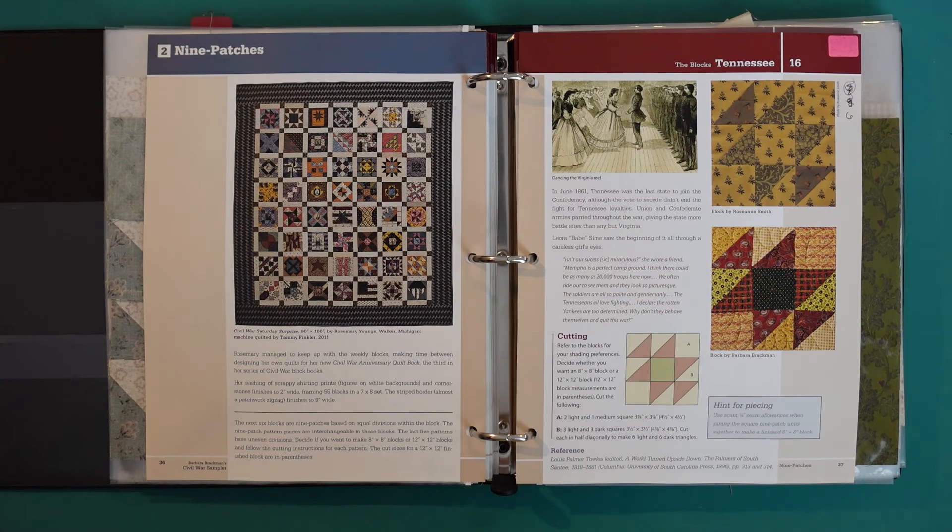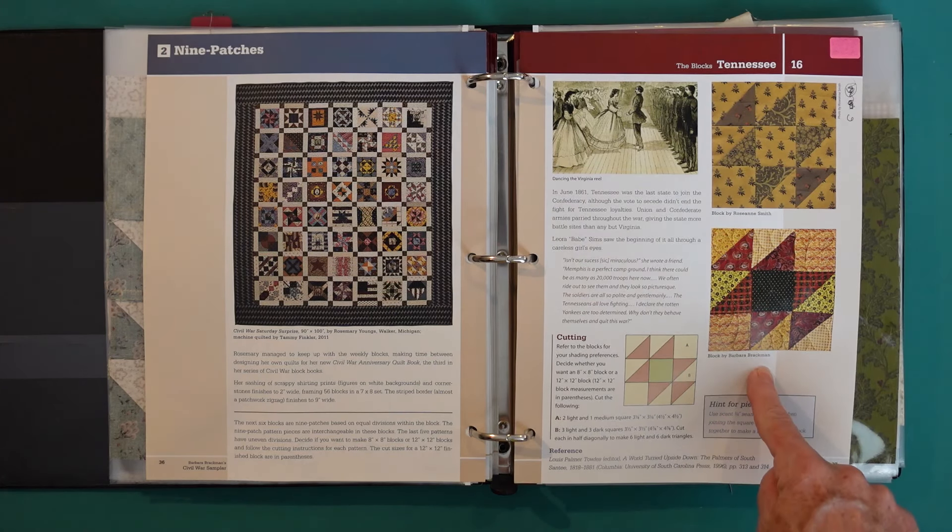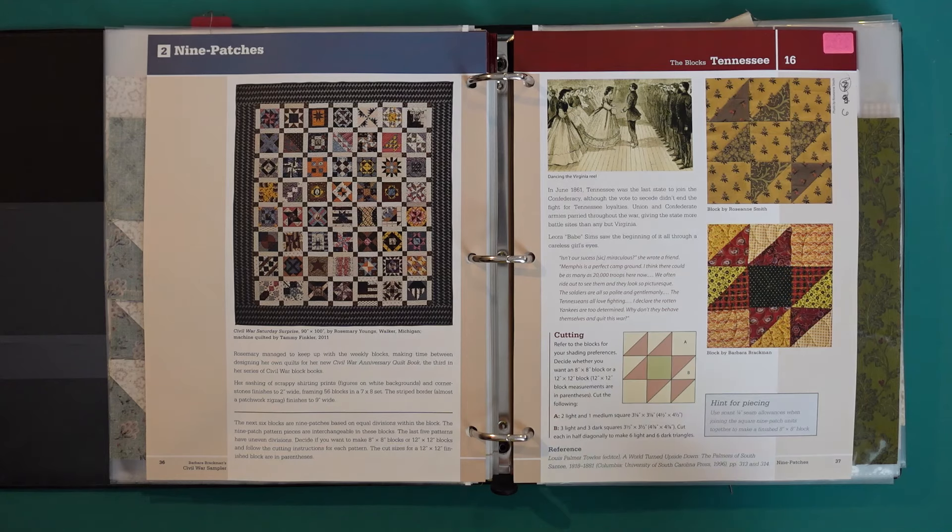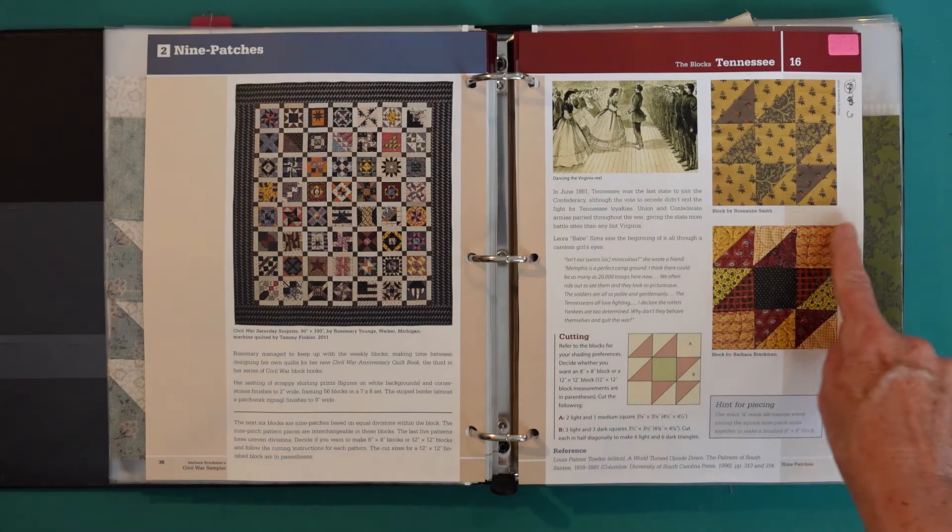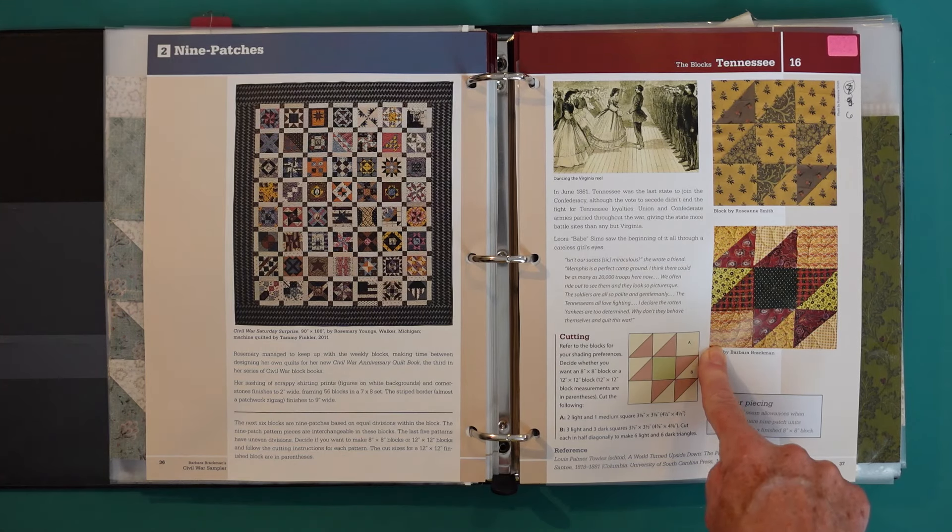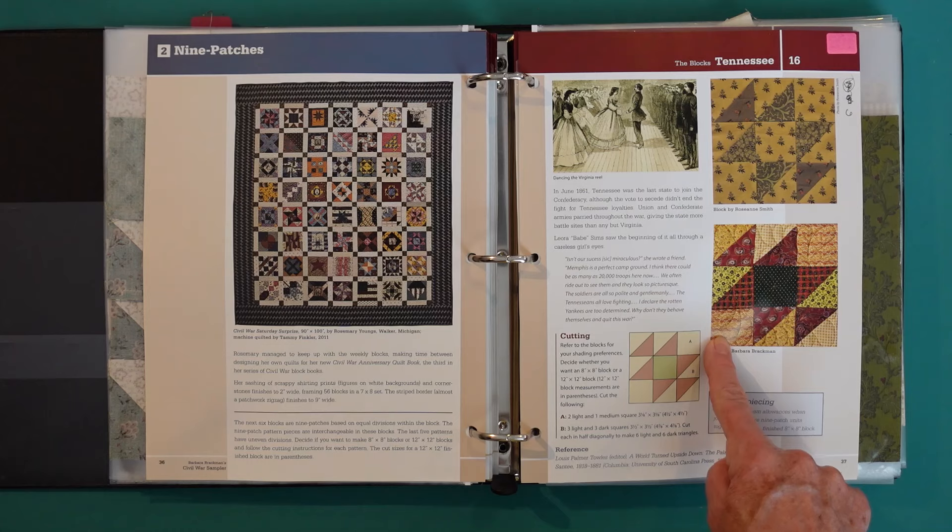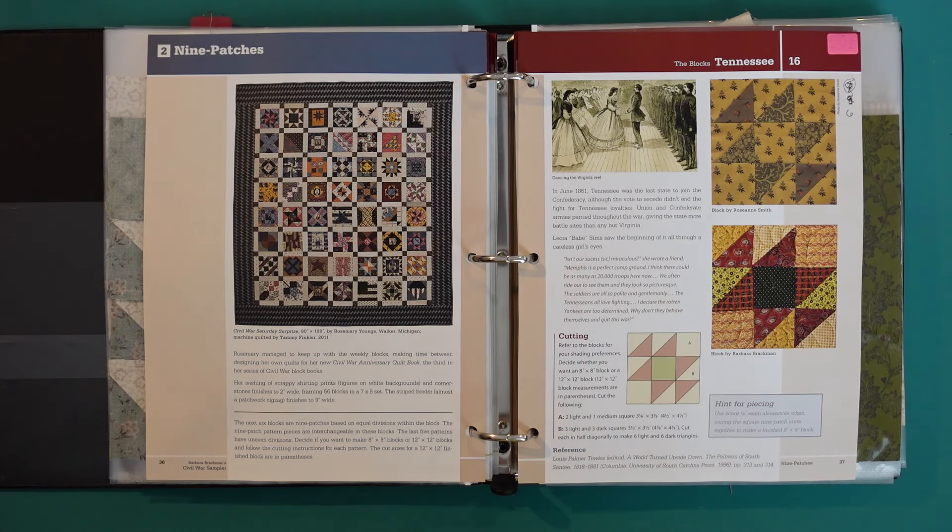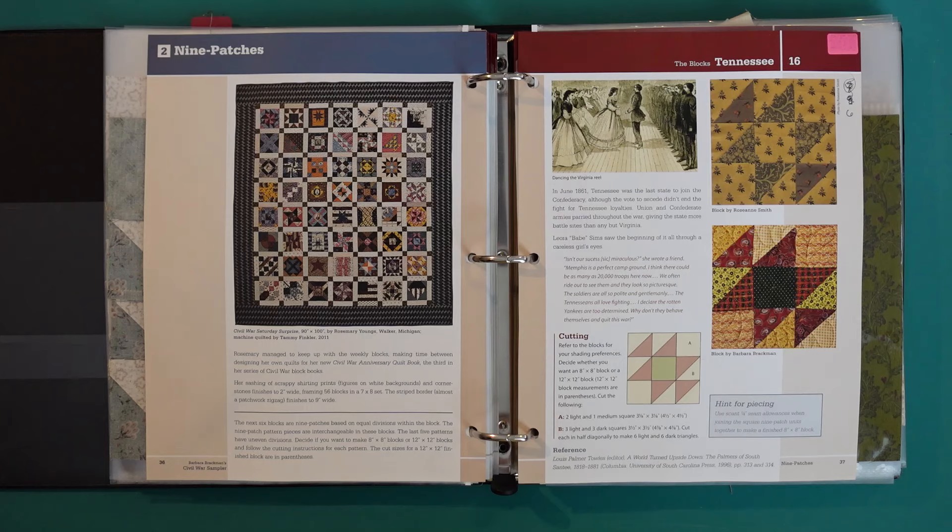Next up is block number 16, which is the Tennessee block. As you can see, it's set up exactly the same way as number 28, the soldier's aid. But in this case, Barbara has you cutting so that this entire block finishes at 8 inches or 12 inches without a border around the outside edge. To make things easier, I've decided that I'm going to finish this as a 6 inch finished block and add the same border that I added around the soldier's aid block number 28. I don't want the soldier's aid block to be the only block in my quilt that has a border around the outside edge.